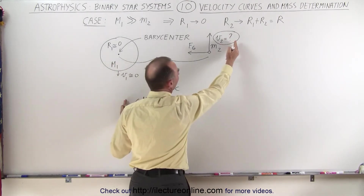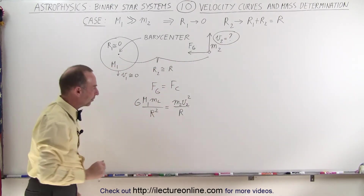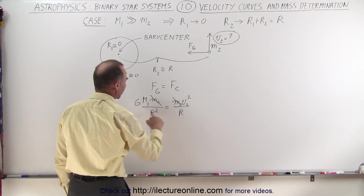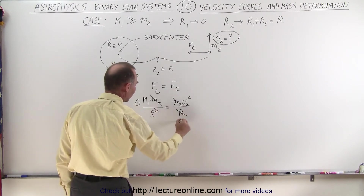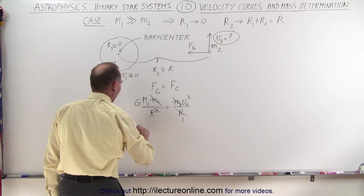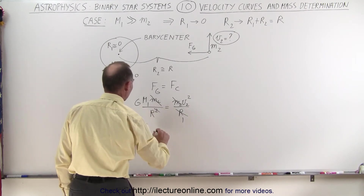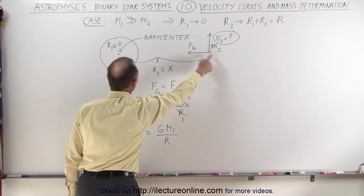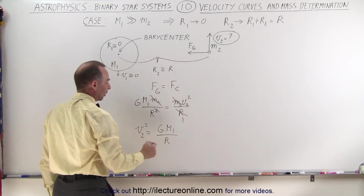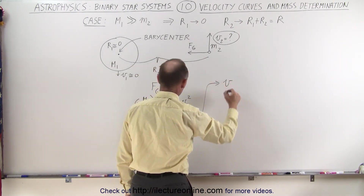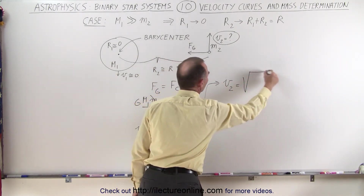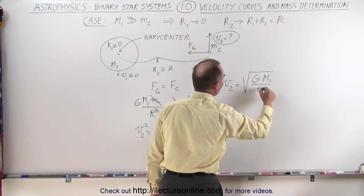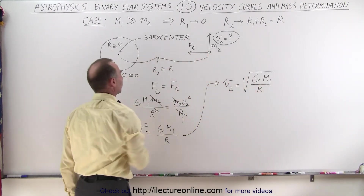Now let's solve this equation for the velocity of the small object. First, we can get rid of the mass m2 on both sides, and we have one r on the right and r squared on the left, so one r cancels out. Solving for v squared, we get v2 squared equals G times m1 divided by r — the distance from the small object to the large object. Taking the square root of both sides, we get v2 equals the square root of the gravitational constant times the mass of the large object divided by the distance between the small and large object.